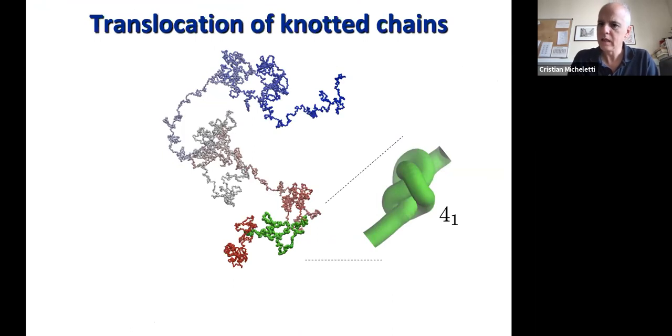I'm going to show you what happens when you translocate a knotted chain. This is a chain. It is knotted. The knot is in the red region. We have developed algorithms that identify the knotted region for you.